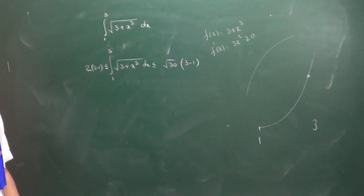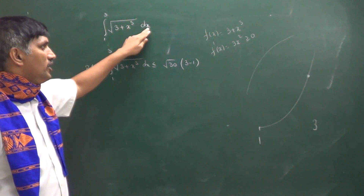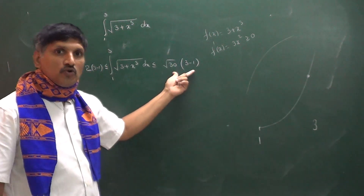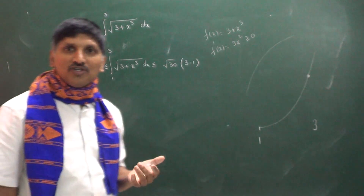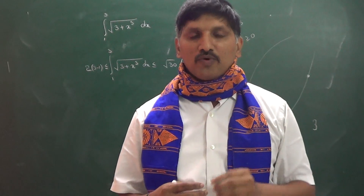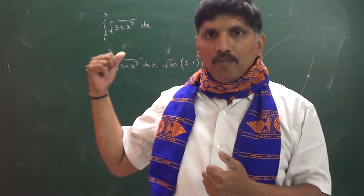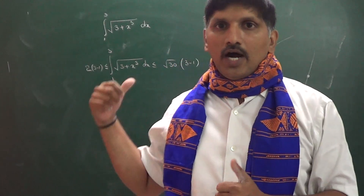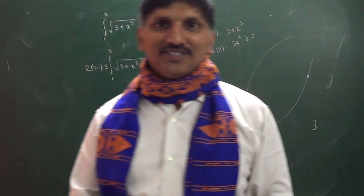So the integral from 1 to 3 of √(3 + x³) dx has maximum value 2√30 and minimum value 4. That is the discussion based on these two properties — the Leibniz rule and the inequality property of definite integrals. Thank you very much.